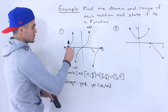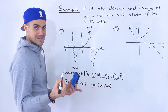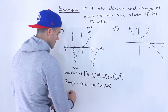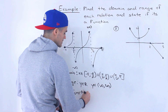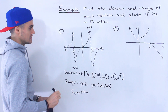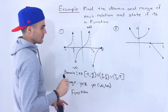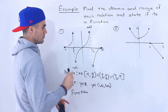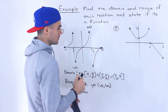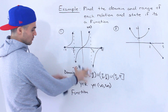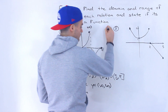Is this a function or not? If we run a vertical line through it, notice it passes the vertical line test — it doesn't fail at any point. There are no multiple y values for a single x value, so this first graph is indeed a function.